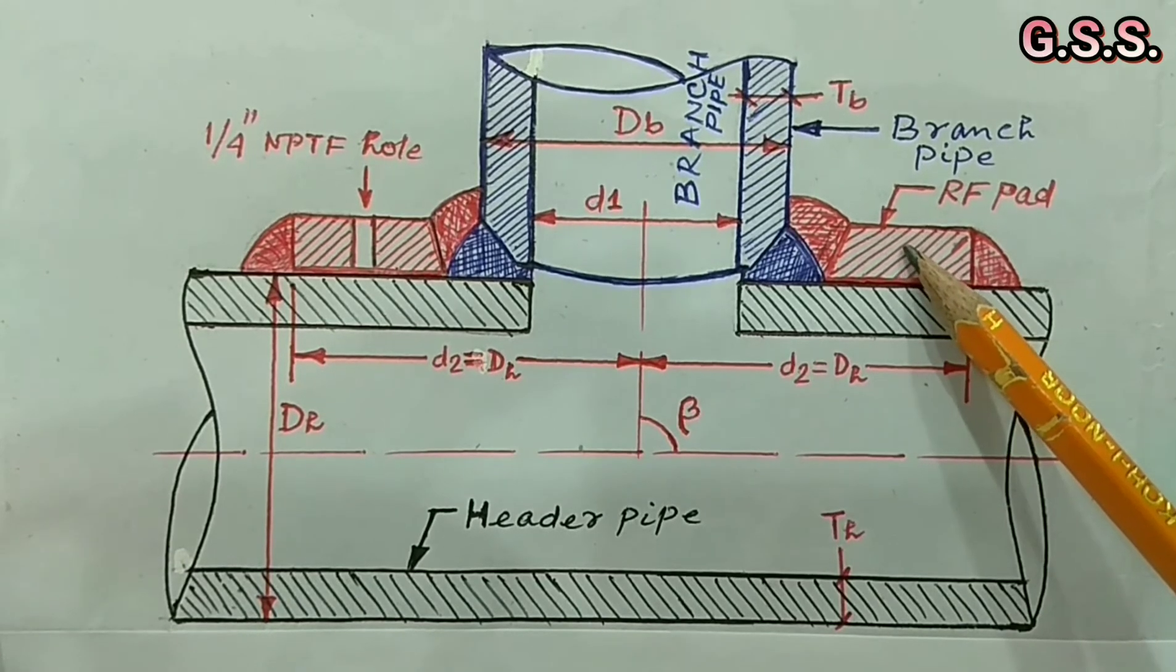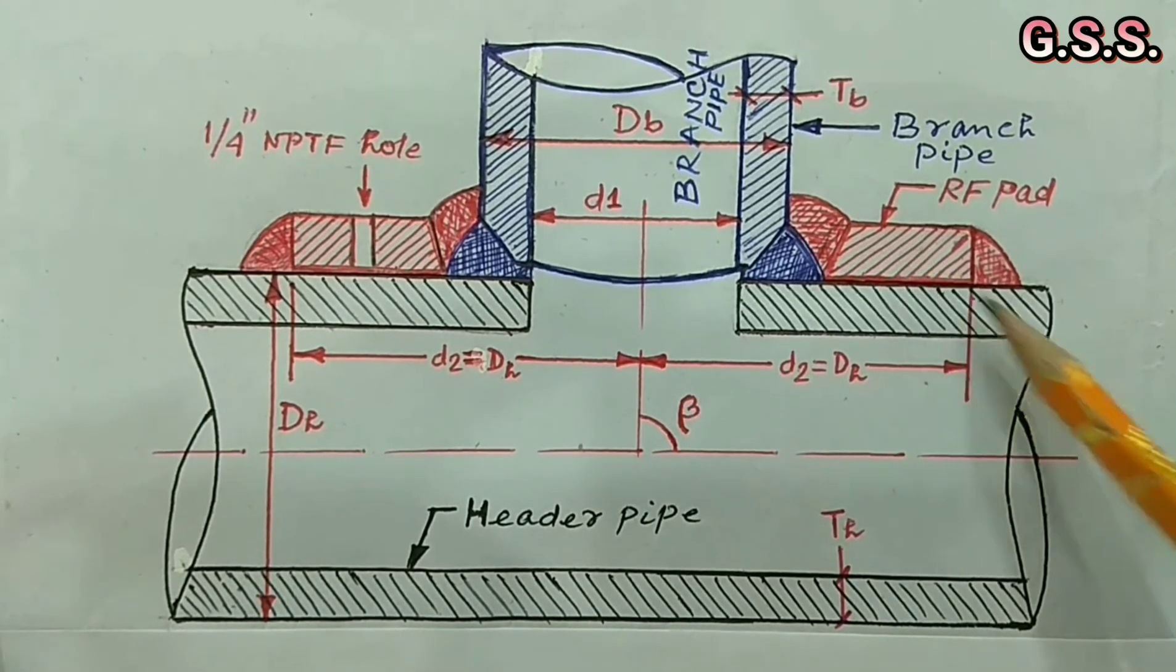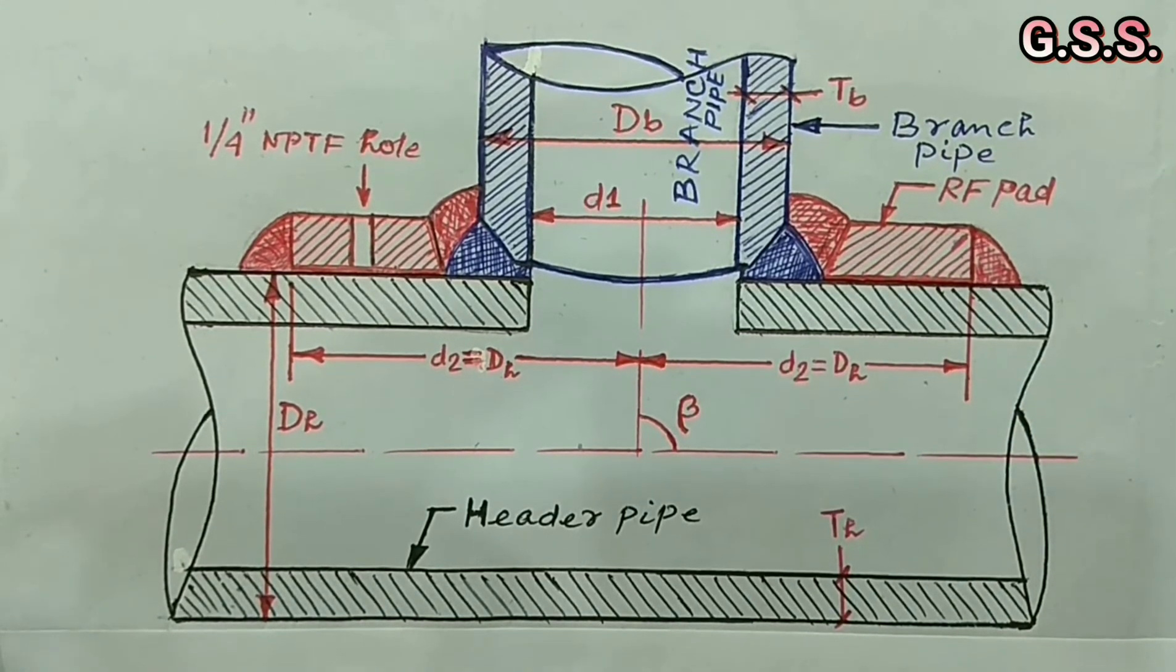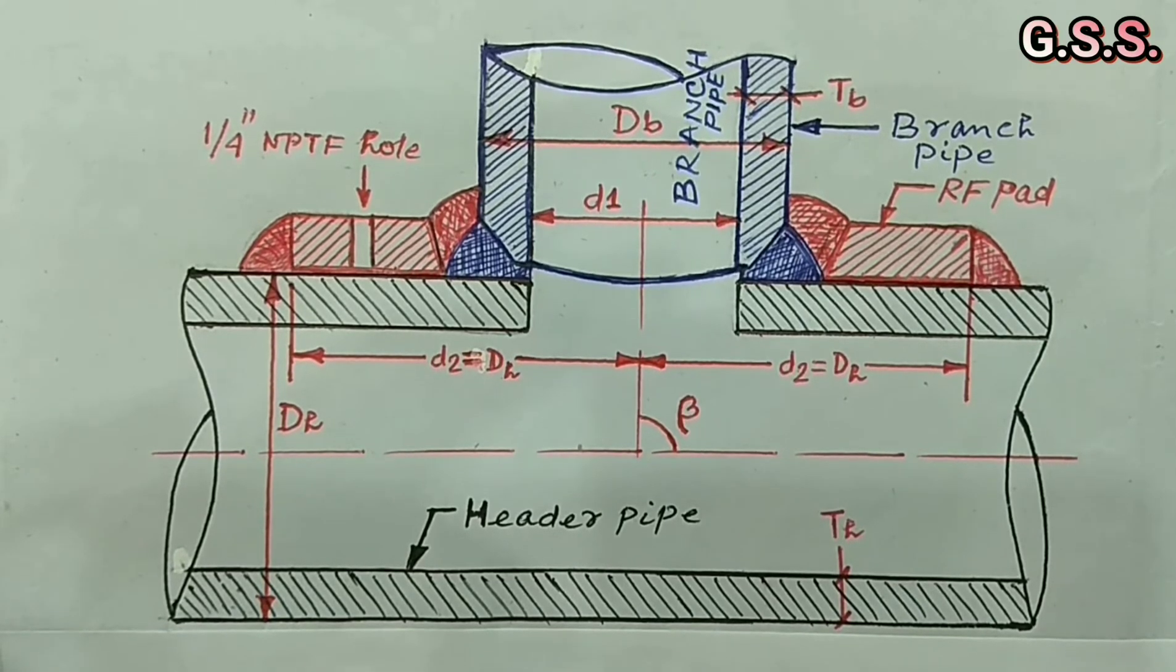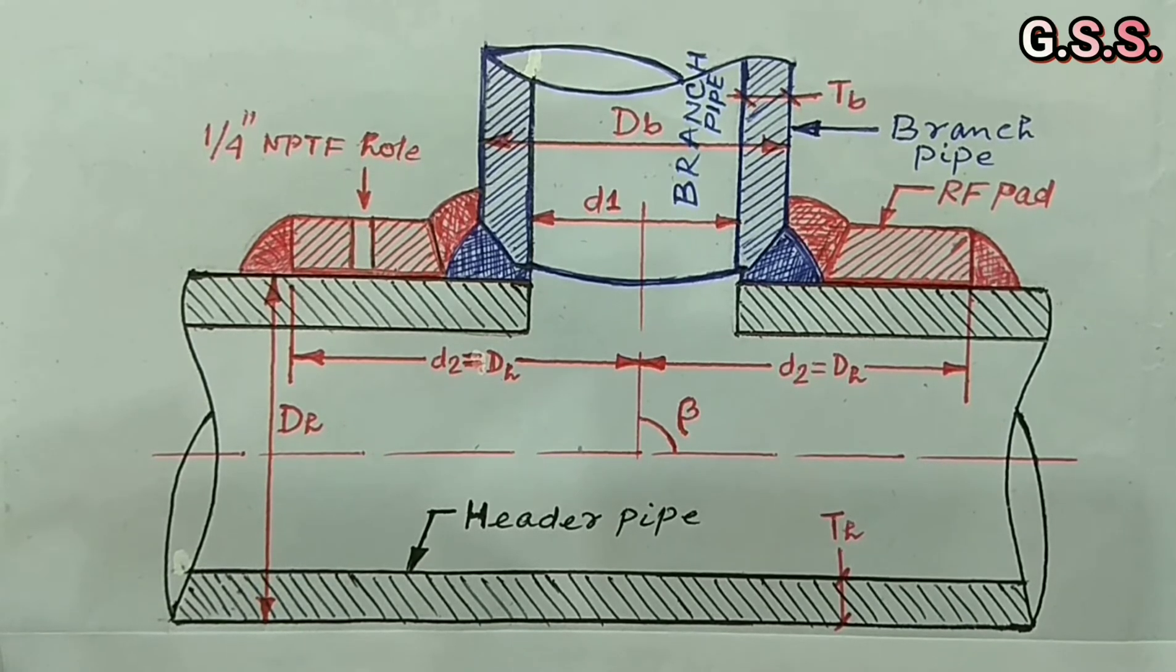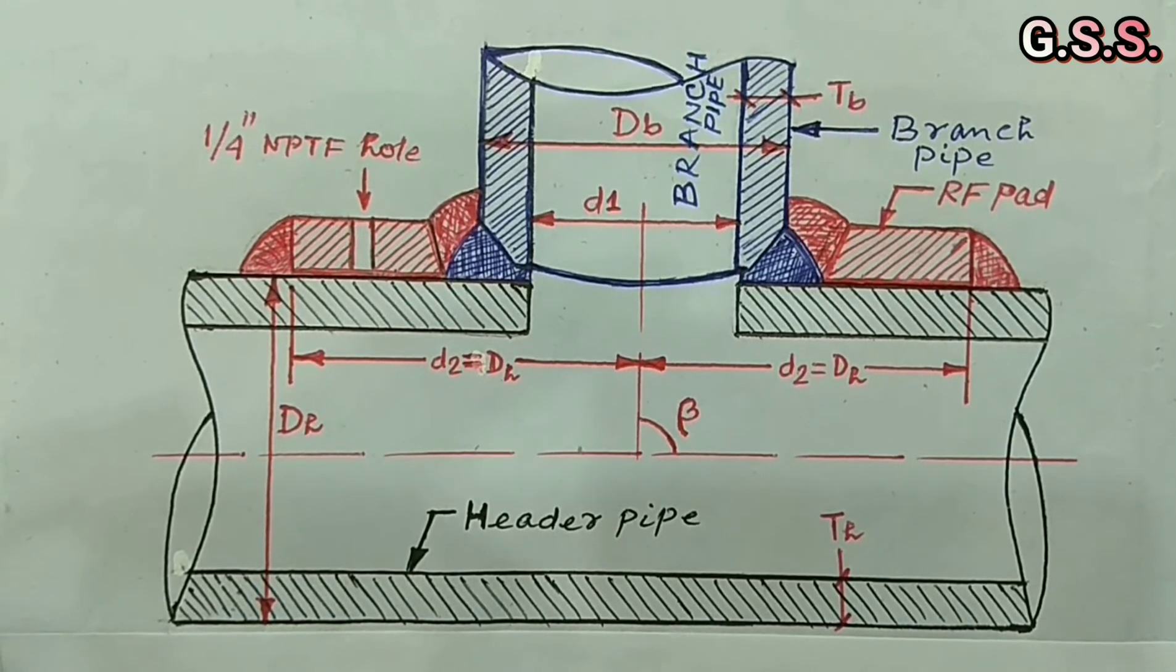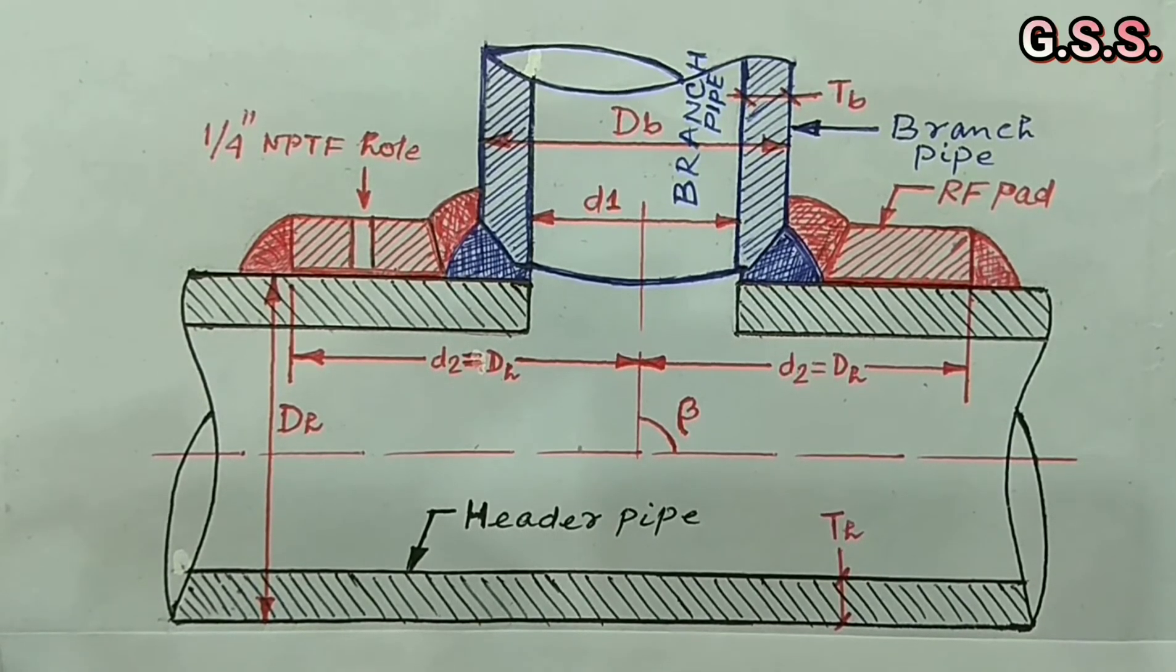That means reinforced branching. It may happen that reinforced branching is found safe from internal pressure calculation but it fails in pipe stress analysis. Then we have to go for butt weld NT.